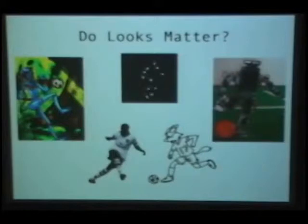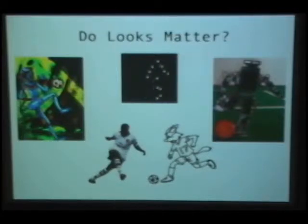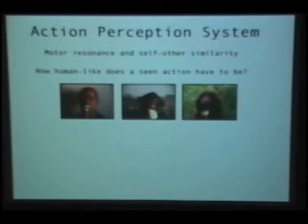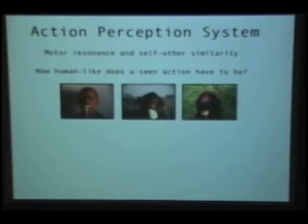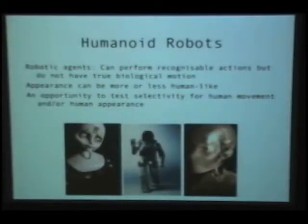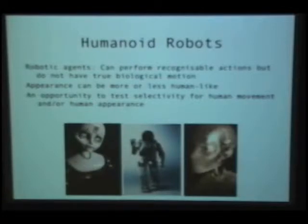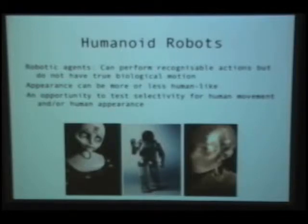The next question we asked was: do looks matter? In all these images, you can see someone playing football, playing soccer, but they have different appearances. If we think about this idea of motor resonance, this might be important, because if I'm linking myself and another body, and if there's a high degree of similarity between my body and that body, that simulation or resonance might be stronger. So how human-like does a seen action have to be? Humanoid robots and other artificial intelligence become very interesting in this context, because they can allow us to address this question. A robot can perform recognizable actions, but it doesn't have truly biological motion, as in at least today's robots. But also, unlike human beings currently, their appearance can be much more or much less human-like.